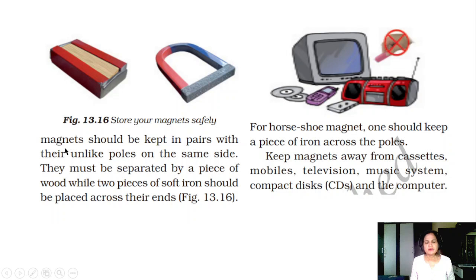Bar magnets should be kept in pairs with their unlike poles on the same side. They must be separated by a piece of wood while two pieces of soft iron should be placed across their ends. For horseshoe shaped magnets, one should keep a piece of iron across the poles. Keep the magnets away from cassettes, mobiles, television, music systems, compact discs, and computers.